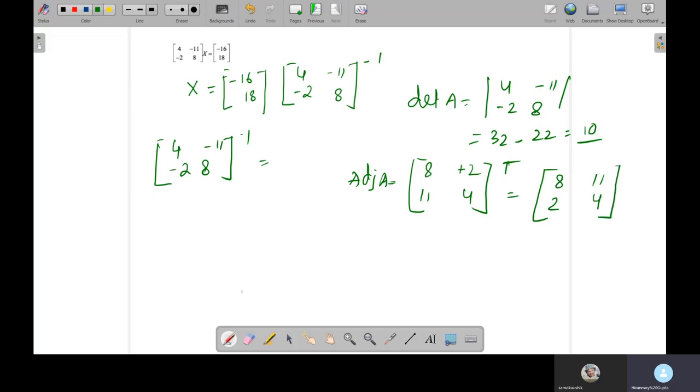Now what is the inverse of this? Now inverse of this matrix you have to find. So you can check this inverse of matrix. Inverse of matrix is 1 by determinant of A, 1 by 10, which should be multiplied with 8, 11, 2, and 4. So my matrix will be 8 over 10, 11 over 10, 2 over 10, and 4 over 10. So you can just simplify this matrix.